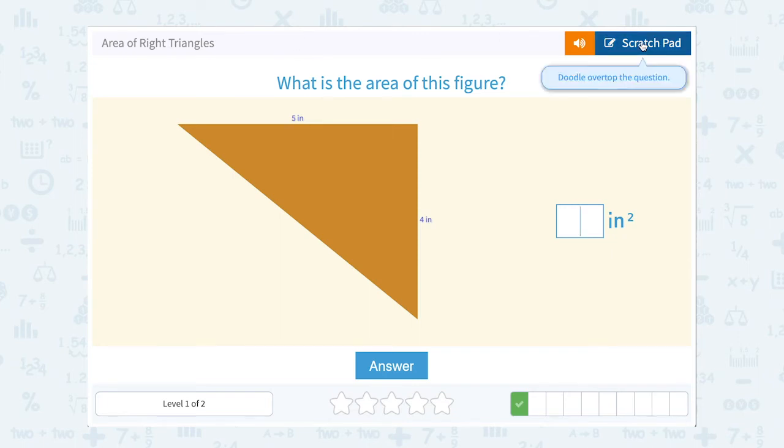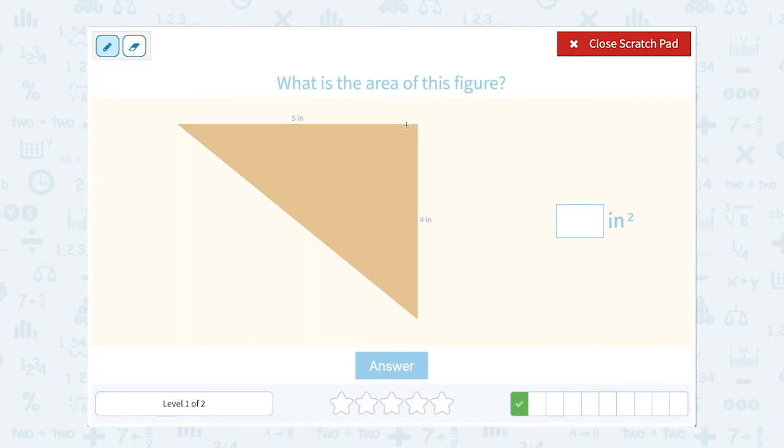What is the area of this figure? Well again these two sides would have to represent the base and the height. They make up our 90 degree angle. So if we set up our formula area equals one half base times height, this one is going to work out exactly the same as the last problem we saw.